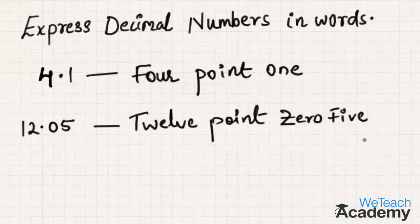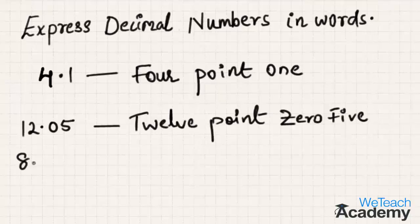While expressing these decimal numbers, you need to always remember that the decimal part must be expressed separately — that is, each digit must be expressed separately and not together. Now let us consider one more decimal number and try to express it in words.